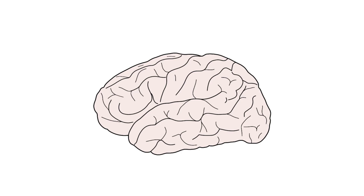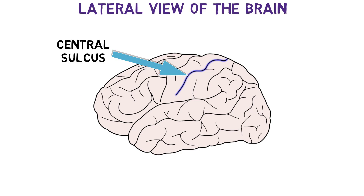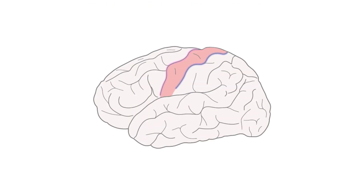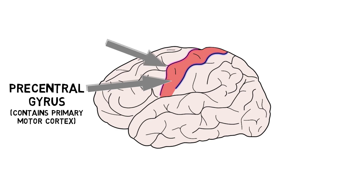To examine some other major sulci and gyri, we'll start with a side or lateral view of the brain. One of the major landmarks of the lateral surface is the central sulcus, which separates the frontal lobe from the parietal lobe. Immediately anterior to the central sulcus is the precentral gyrus, which contains the primary motor cortex, an area essential for voluntary movement. The precentral gyrus extends to the precentral sulcus.